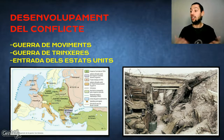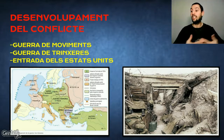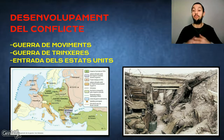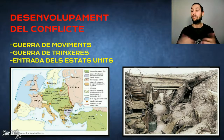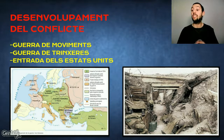En tercer i darrer lloc, corroborem l'última etapa amb l'entrada dels Estats Units i el final de la guerra. La recent nascuda Unió Soviètica abandonava el conflicte amb la signatura del Tractat de Brest-Litovsk, pel qual concedia bona part de les seves conquestes imperials a Alemanya, cosa que li costà una autèntica guerra civil. Aquesta retirada fou compensada per la intervenció dels Estats Units, sempre reticents a la ingerència en els afers europeus, però que s'hi implicaren després de l'enfonsament del transatlàntic Lusitania.